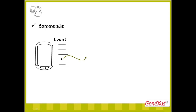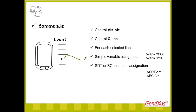Apart from the invoking commands we have just seen, there are also other ones that allow for the possibility of making a screen control either visible or not, the possibility of changing the class of a screen control, the possibility of iterating through only those grid lines selected by the user prior to executing the event, the possibility of assigning values to variables of simple data types, and to variables of compound data types, structured or business components. Lastly, we have the composite command.